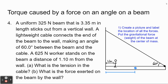A uniform 325 Newton beam that is 3.35 meters in length sticks out from a vertical wall. A lightweight cable connects the end of the beam to the wall, making an angle of 60 degrees between the beam and the cable. A 625 Newton worker stands on the beam a distance of 1.1 meters from the wall. We want to calculate the tension in the cable and the force exerted on the beam by the wall.